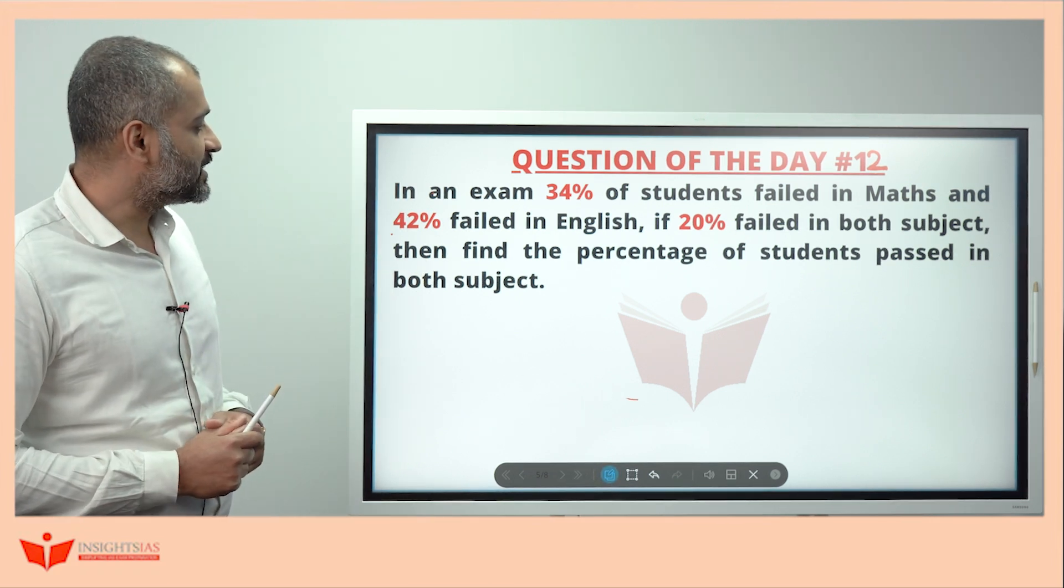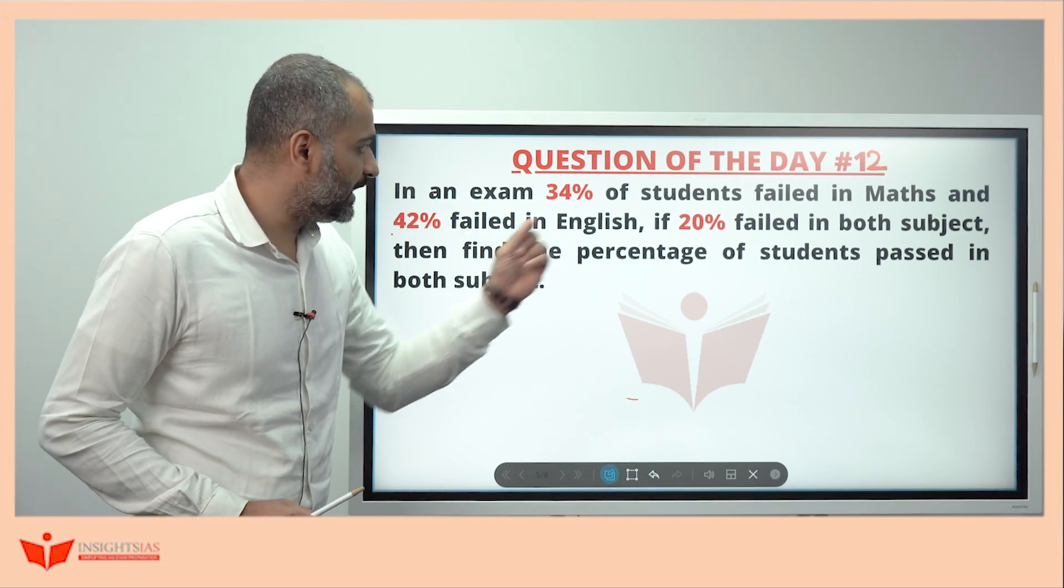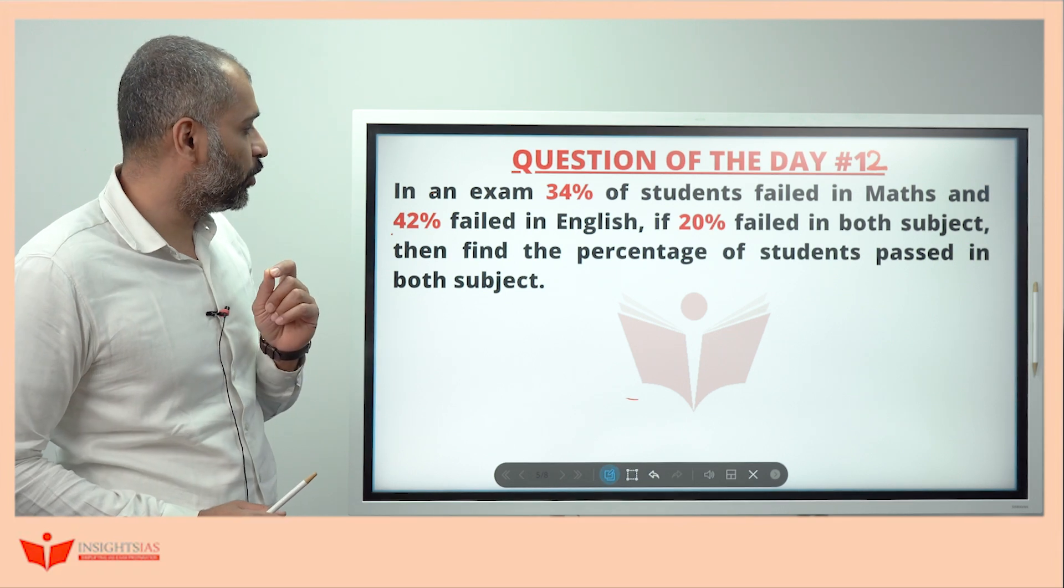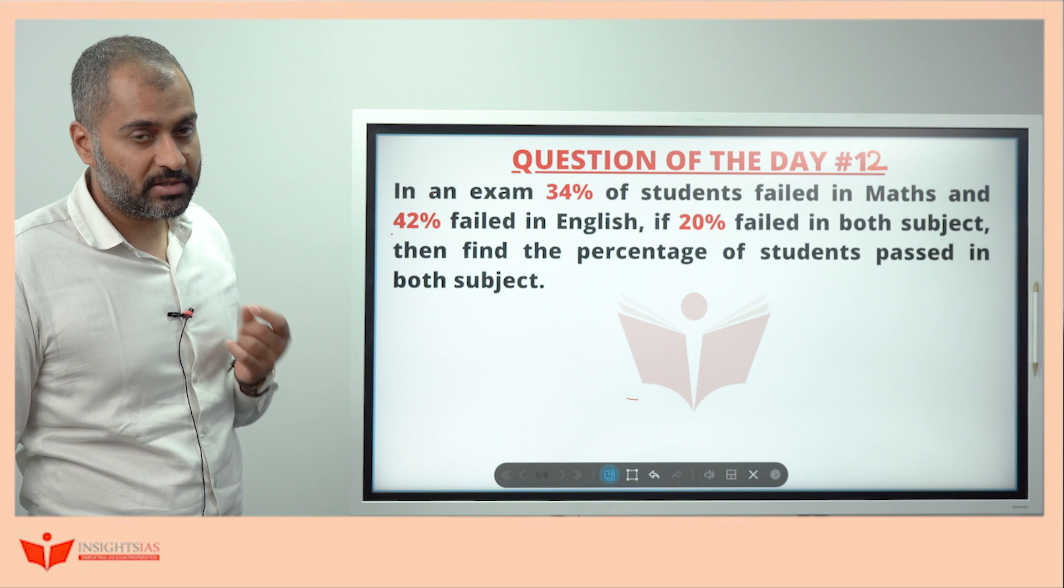And this question is, in an exam, 34% of students failed in Maths, 42% failed in English and 20% failed in both. Then find the percentage of students passed in both the subjects.